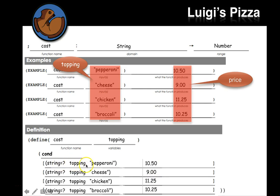It has the boolean part, which is either true or false, and then the output, if it's true. So if the left part is true, then the right part gets returned. And if more than one happened to be true, it'll be the first one from the top. The first true one that gets hit, that's the one that returns. So when I put in a string, if it's pepperoni, then I get 10.50 out. If it's cheese, I get nine out. If it's chicken, I get 11.25 out. If it's broccoli, then I get 10.25 out.